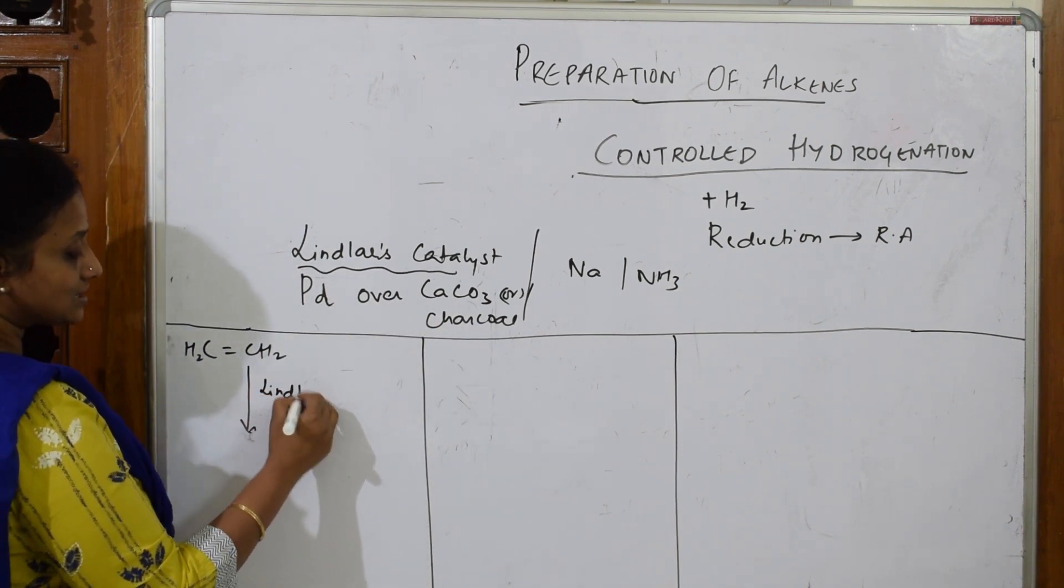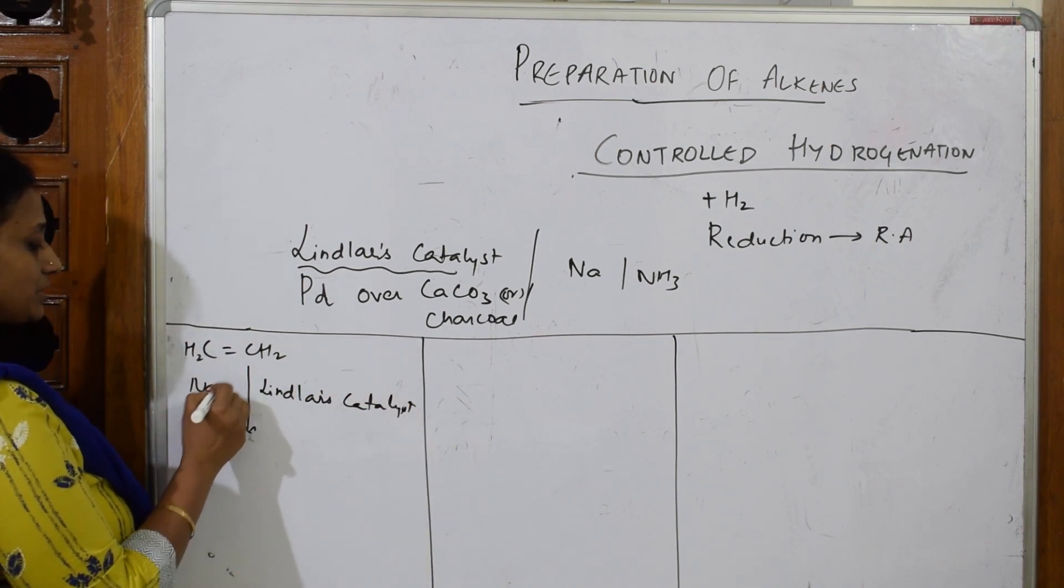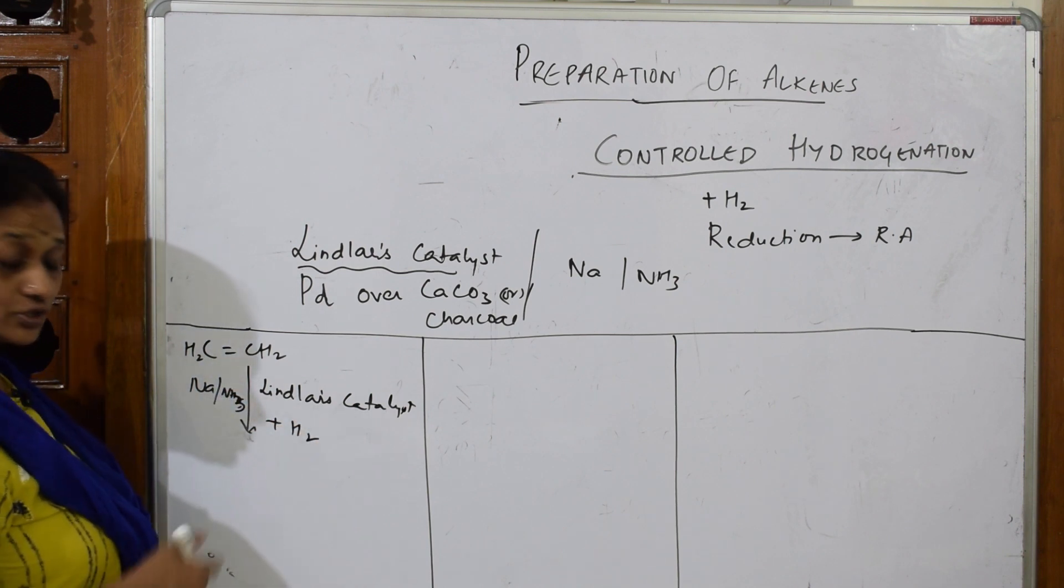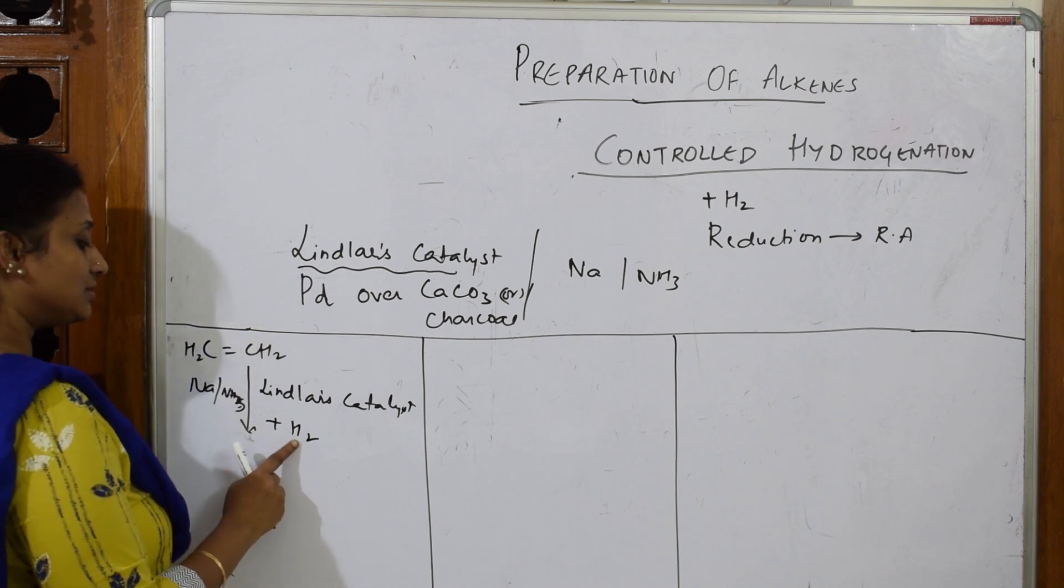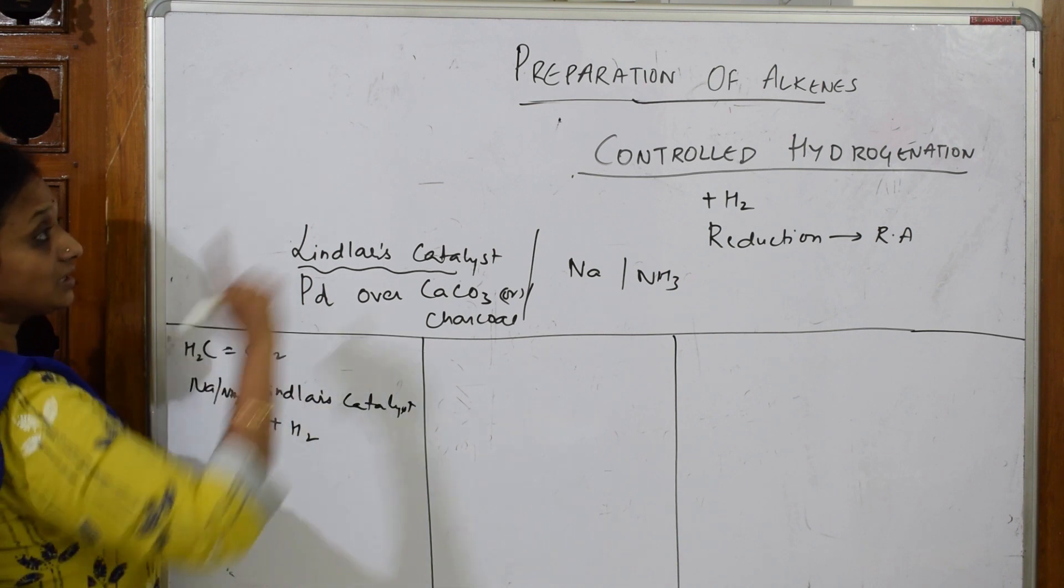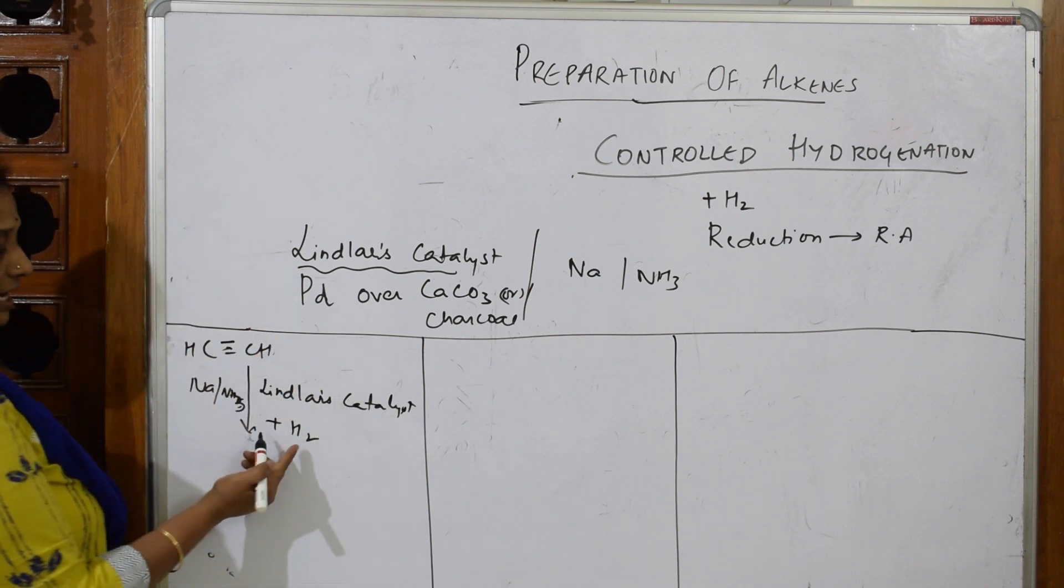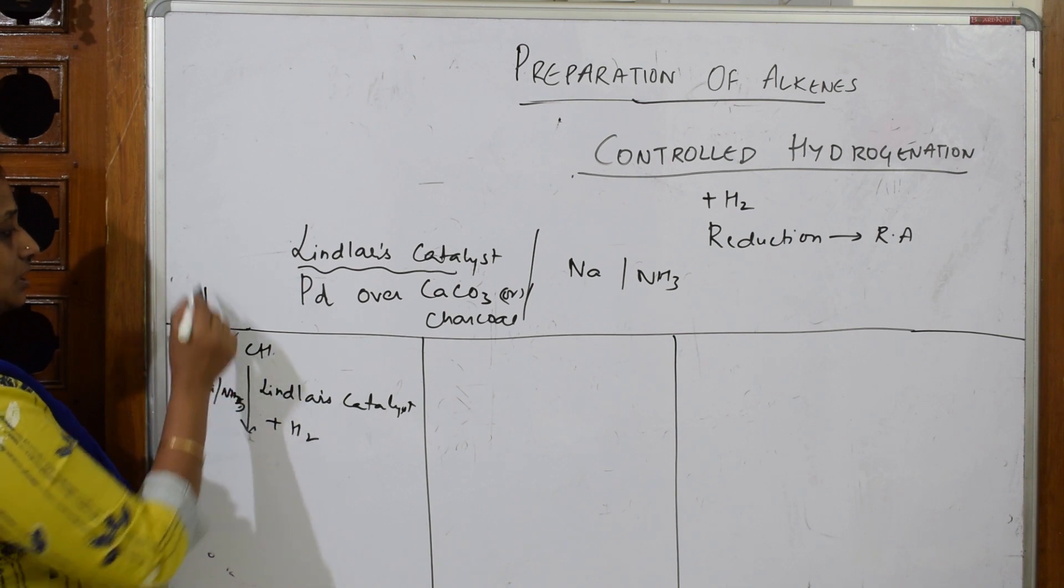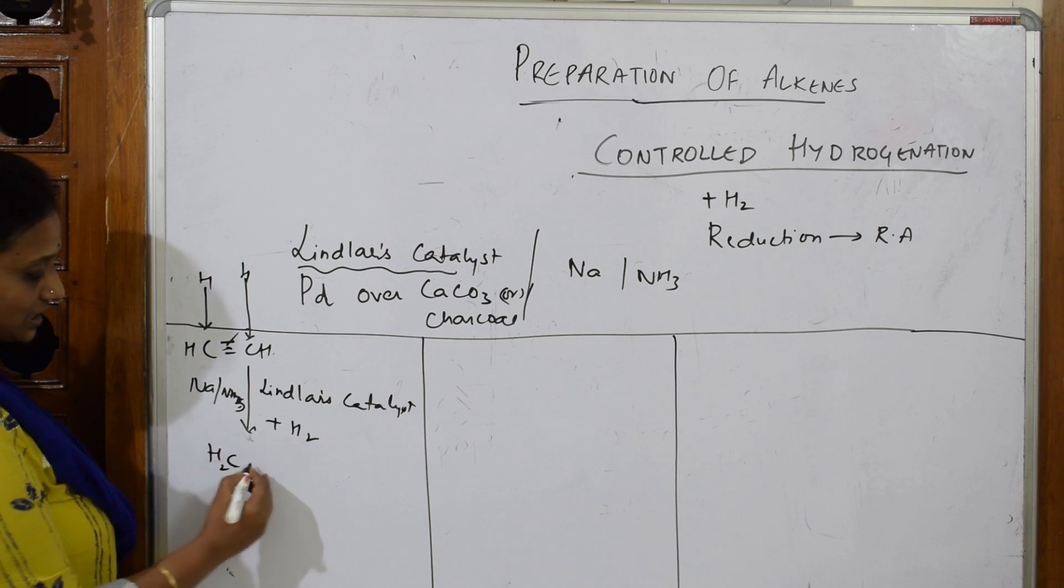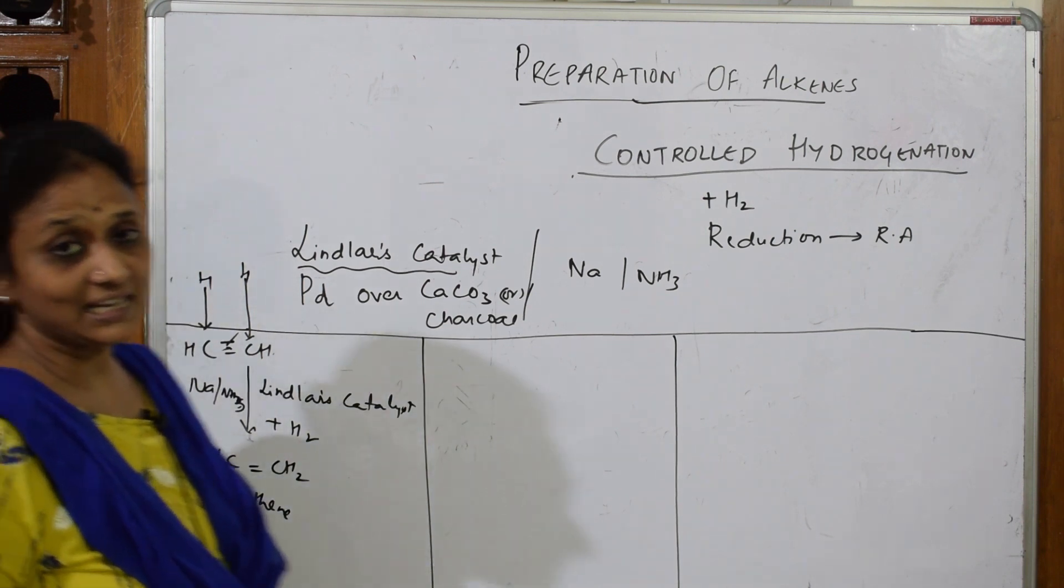Whenever you see Lindlar's catalyst, you should just add hydrogen. I'm going to use Lindlar's catalyst, or it can be sodium in the presence of ammonia. What are they going to do? They're going to add hydrogen. First important thing is here, this hydrogen is added. They're going to break this bond. But here we are preparing alkenes, so I should not take alkenes, I'll take alkynes. One hydrogen adds here, breaking this bond, and one more hydrogen adds here, breaking this bond. What do I get? I'm going to get CH2 double bond CH2. This is your ethene, which I have prepared from alkyne, that is ethyne.